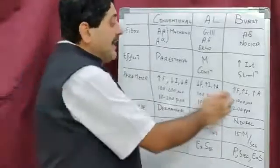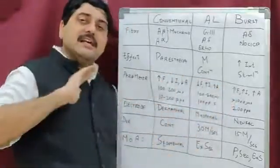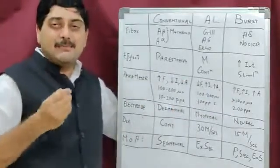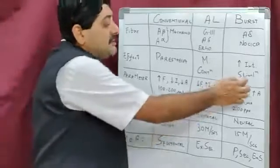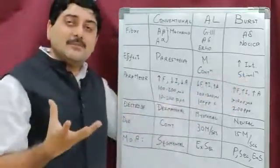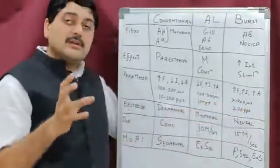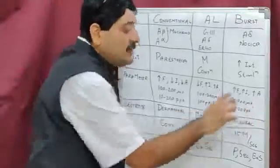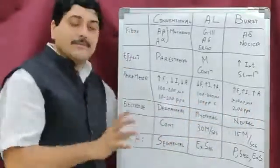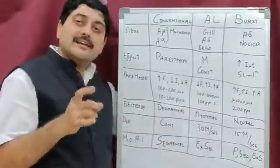The third type, Burst TENS, is high frequency, high intensity, and high amplitude because it is an irritational type of current — it works by increasing the intensity of stimulation. It has a pulse width of more than 1000 microseconds and a frequency of 200 pulses per second.